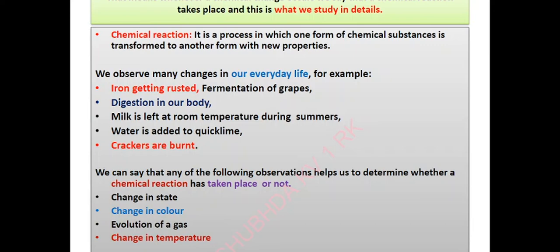We will study these chemical reactions and equations in this chapter. So, a chemical reaction is a process in which one form of chemical substance is transformed to another form with new properties. Chemical reactions are always represented by chemical equations.